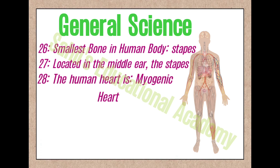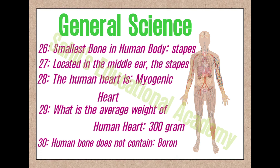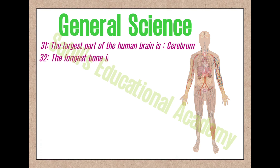28. The human heart is a myogenic heart. 29. What is the average weight of the human heart? 300 grams. 30. Human bone does not contain boron. 31. The largest part of the human brain is the cerebrum. 32. The longest bone in the human body is the femur.